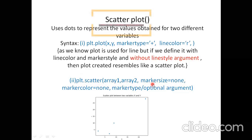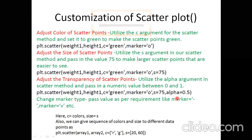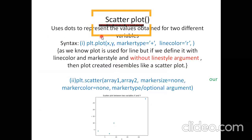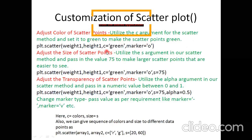There are more attributes associated with plt.scatter: you can specify marker size, marker color, and marker type. Marker refers to the data points — you can change their size, color, and shape. These dots represent your markers. Now let's look at the customizations available: you can adjust the color of scatter points, which by default are in blue, using the 'c' argument or the 'color' argument.